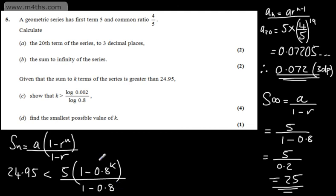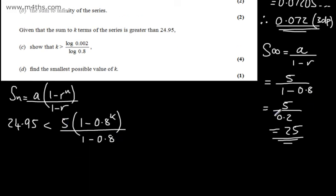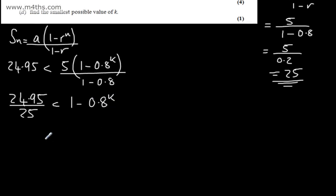If we look at this now, we know that 5 over this quantity is 25, so 24.95 divided by 5 over 0.2 is going to give me 1 minus 0.8 to the power of k. At this stage, I'm going to write 0.8 to the power of k is less than 1 minus this quantity.